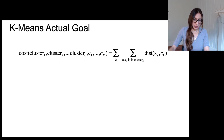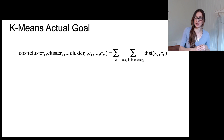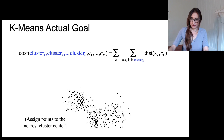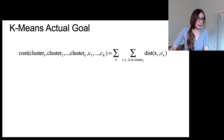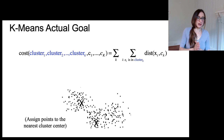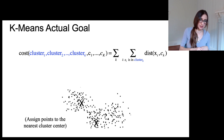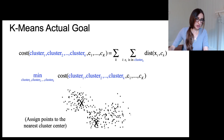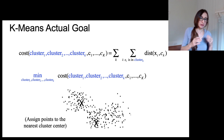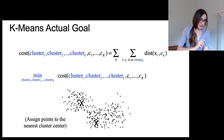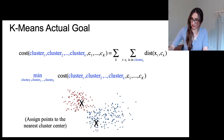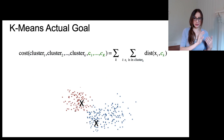I'm going to change these things independently — changing who is assigned to what cluster and what those cluster centers are. First, fixing the cluster centers and finding the optimal cluster assignments: that's simply choosing each point to be assigned to its closest cluster center. For example, for these two cluster centers, I assign all the nearby points to each respective cluster.